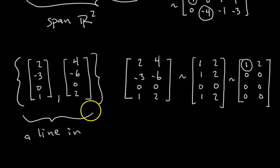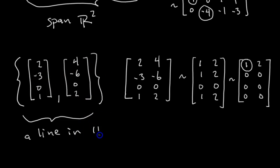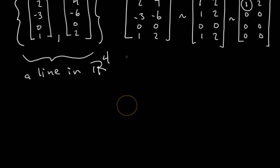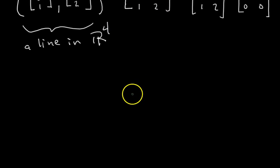In what dimensional space? These vectors are in R4, so it's a line in R4 — they span a line in R4. Hopefully you're seeing the beauty of this technique: it works every single time.